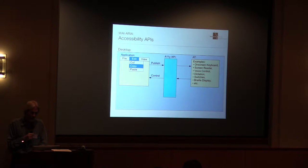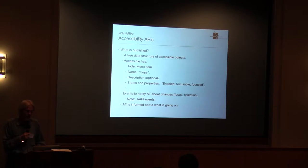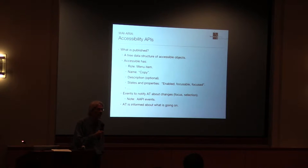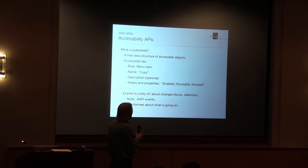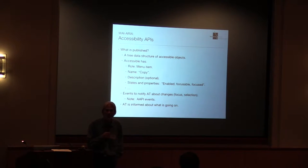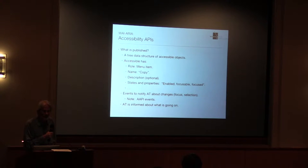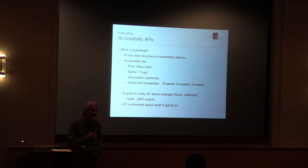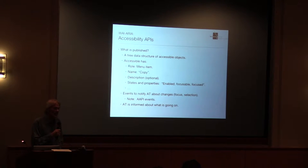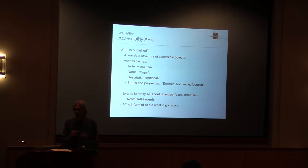Inside the accessibility API there is a tree data structure consisting of accessible objects, each possibly containing other accessible objects. Each accessible has at least a role — for instance, a menu item role for the highlighted item. It has a name, in this case 'copy'. It may or may not have a description, which you can think of as a tool tip. It also has various states and properties: things like enabled, focusable, has keyboard focus, selectable, checked, and so on.